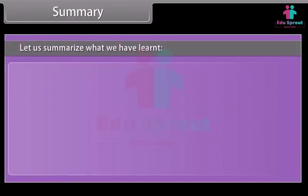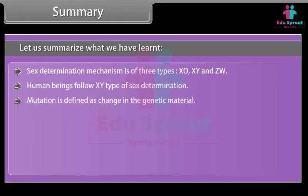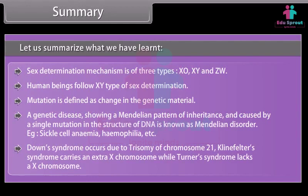Let us summarize what we have learned. Sex determination mechanism is of three types: XO, XY, and ZW. Human beings follow the XY type of sex determination. Mutation is defined as a change in the genetic material. A genetic disease showing a Mendelian pattern of inheritance caused by a single mutation in DNA is known as a Mendelian disorder — examples include sickle cell anemia and haemophilia. Down's Syndrome occurs due to trisomy of chromosome 21, Klinefelter's Syndrome carries an extra X chromosome, while Turner's Syndrome lacks an X chromosome.